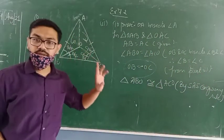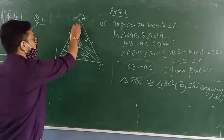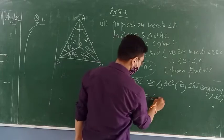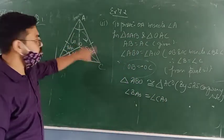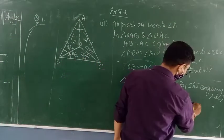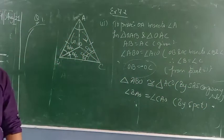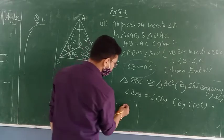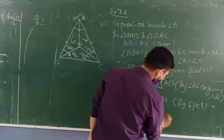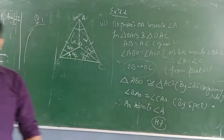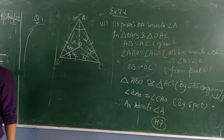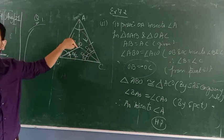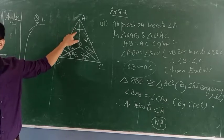If these two triangles are congruent, that means their corresponding parts are also congruent or equal. So now I can say angle BAO equals angle CAO by CPCT. If these two angles are equal, in other words I can say that AO bisects angle A.